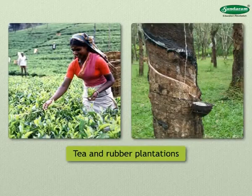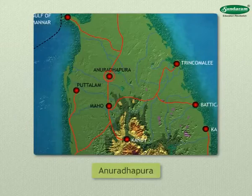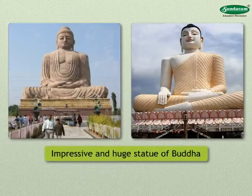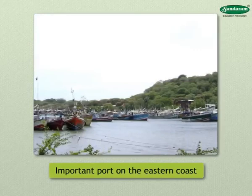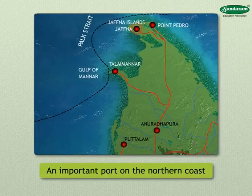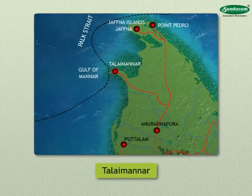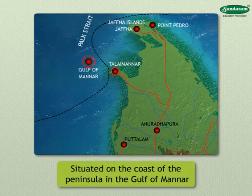Anuradhapura was the capital of Sri Lanka in the past, and there is an impressive and huge statue of Buddha in this city. Trincomalee is situated near the mouth of the river Mahavali Ganga and is an important port on the eastern coast. Jaffna is an important port on the northern coast and a trading center. Talaimannar is situated on the coast of the peninsula in the Gulf of Manar, and the important occupation here is retrieving pearls from the sea. This city lies closest to India.